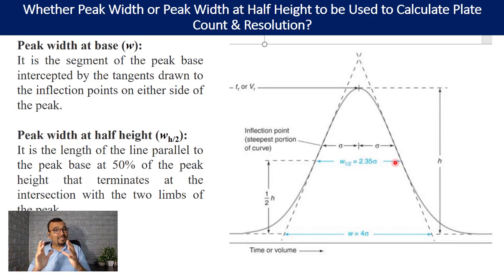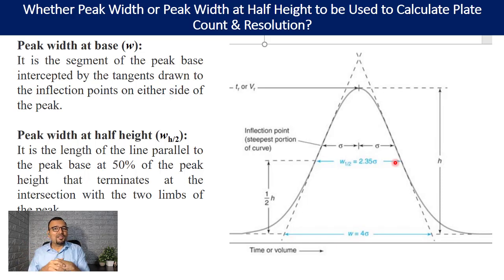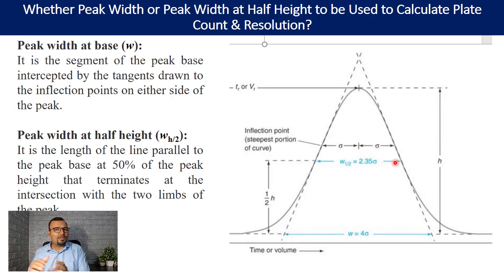Which is easier to calculate — peak width at base or peak width at half height? According to me, the second option is easier. The peak width at half height, W_h/2, is very easy to calculate. In the next part of the discussion, we will try to understand how plate counts and resolution are calculated according to USP general chapter 621.